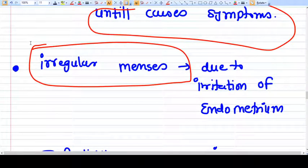Why do fibroids cause irregular menses? Because they are a space-occupying lesion. They cause continuous irritation of the endometrium, and that's why there are irregular menses.